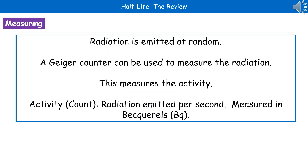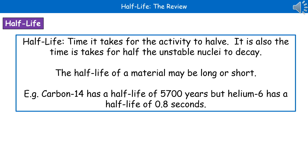For today's physics prep, we're going to look at half-life. When we're thinking about half-life, this is about what happens during radioactive decay. Radiation is emitted at random, and if we want to measure the amount of radiation being emitted, we can use a Geiger counter, which measures something called the activity — the radiation being emitted per second — with units of Becquerels (Bq). Half-life is simply the time it takes for the activity to halve, meaning how long it takes for half of those unstable nuclei to undergo the process of decay.